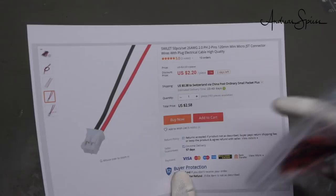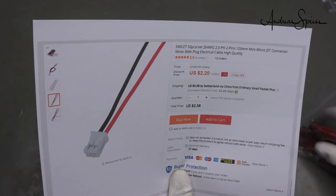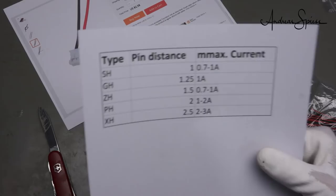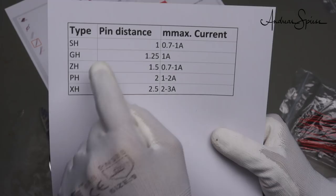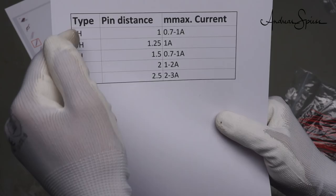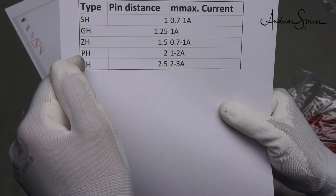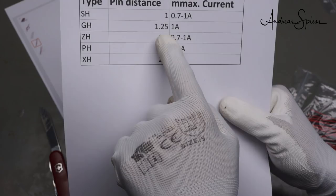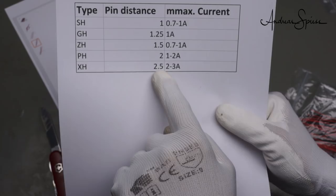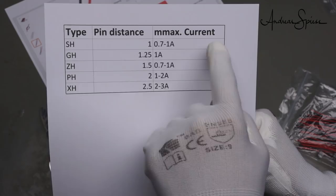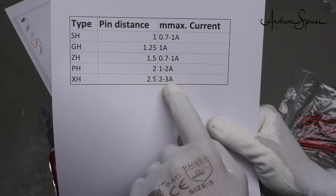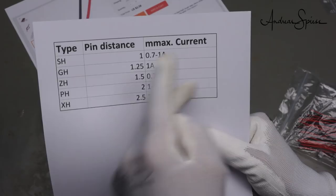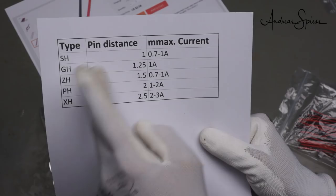So these are PH with a 2.0 millimeter distance between pins, and I thought I'd create a small overview for you because I am also sometimes a little bit confused. We have usually five different JST connectors: SH, GH, ZH or CH, PH, and XH. And you see it starts at one millimeter pin distance, 1.25, 1.5, 2 millimeters, and 2.5 millimeters. And the maximum current is from 0.7 to 1 ampere, and the bigger ones of course support more, 2 to 3 amperes. So I will create a link in the description that you can also download this small overview. It might help you in choosing the right connector.